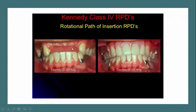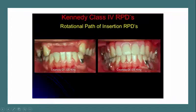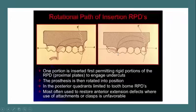Here we have an upper Class 4 and a lower Kennedy Class 2, because I think there is a posterior tooth present. They have utilized eye bars in the lower denture. But in the upper, they cannot use eye bars. So let's see what they have done instead.